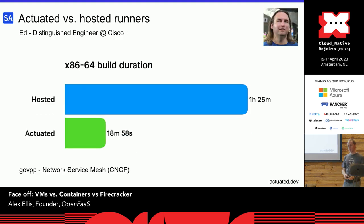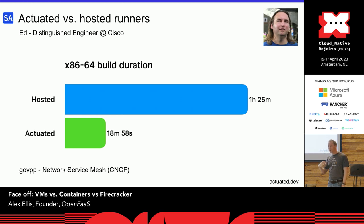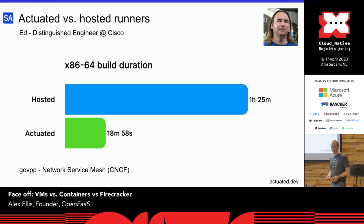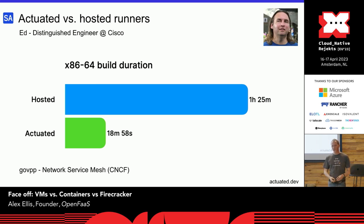Ed had the same problem. He's a distinguished engineer at Cisco working on the Network Service Mesh project. His build took six hours and timed out on ARM because of emulation — GitHub Actions was just too slow. With Actuated we got it down to nine minutes. But this isn't just about ARM. On his powerful laptop he could build in 20 minutes; on GitHub Actions it was an hour and a half. Would you work on an open-source project where you had to wait an hour and a half for feedback? 20 minutes is a lot, but it's viable.